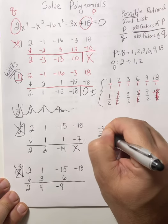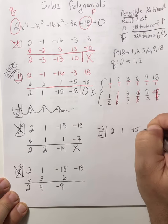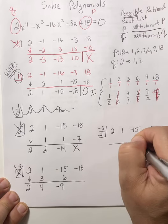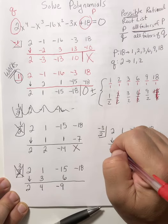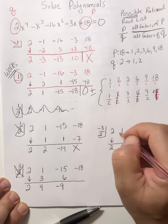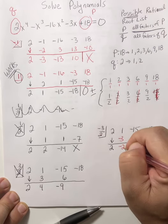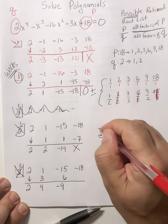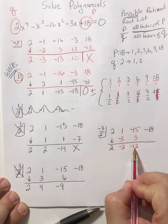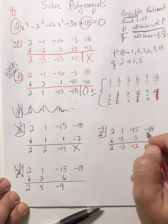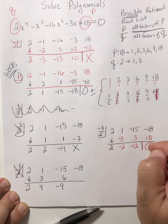Let's try negative 3 halves: 2, 1, negative 15, negative 18. Drop the lead. Negative 3 halves times 2 is negative 3 — 2 goes into 2 once, times negative 3 is negative 3. 2 goes into negative 2: that's negative 1, so it's positive 3. That's negative 12. 2 goes into negative 12: negative 6 times negative 3 is positive 18. If you can't do that in your head, use your calculator. And it works!